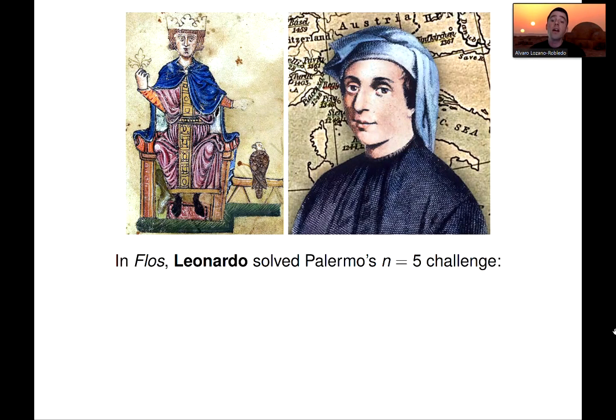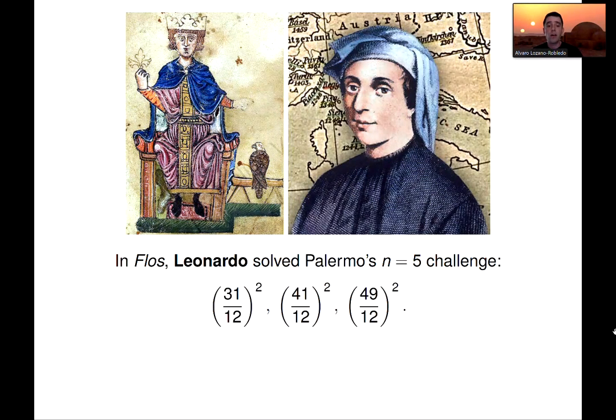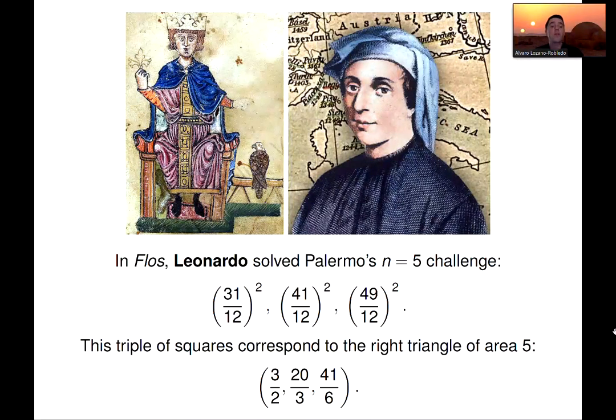So, in his book Flos, Leonardo solved Palermo's n equals 5 challenge, and he found a triple of squares that are in arithmetic progression, and the common difference is 5. That corresponds to the right triangle 3 halves, 20 thirds, 41 over 6.